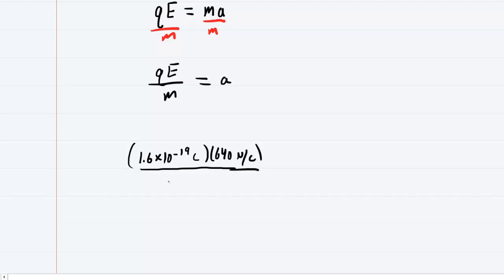The mass of the proton is approximately 1.67 times 10 to the minus 27 kilograms. So let's go ahead and type this into our calculators. And when you do that, you get approximately 6.13 times 10 to the power of 10, and the unit will be meters per second squared since we calculated acceleration. So this will be the correct answer to part A.